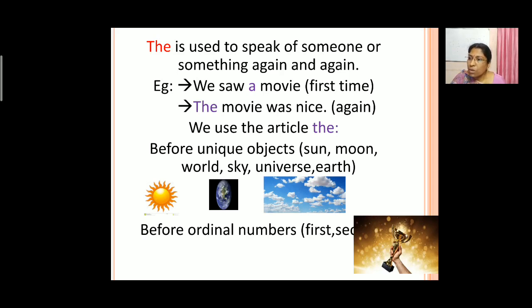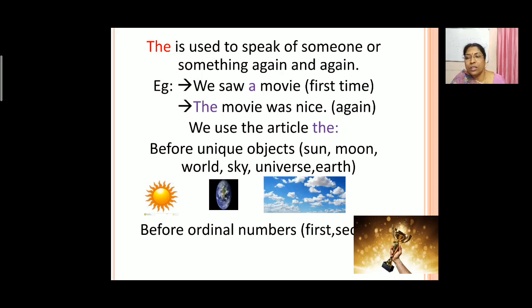Now 'the' is also used. We use the article 'the' before unique objects. So what are the unique objects? Sun, moon, world, sky, universe, earth — all these are unique objects. So before these unique objects we use 'the'. For example: the earth revolves around the sun.